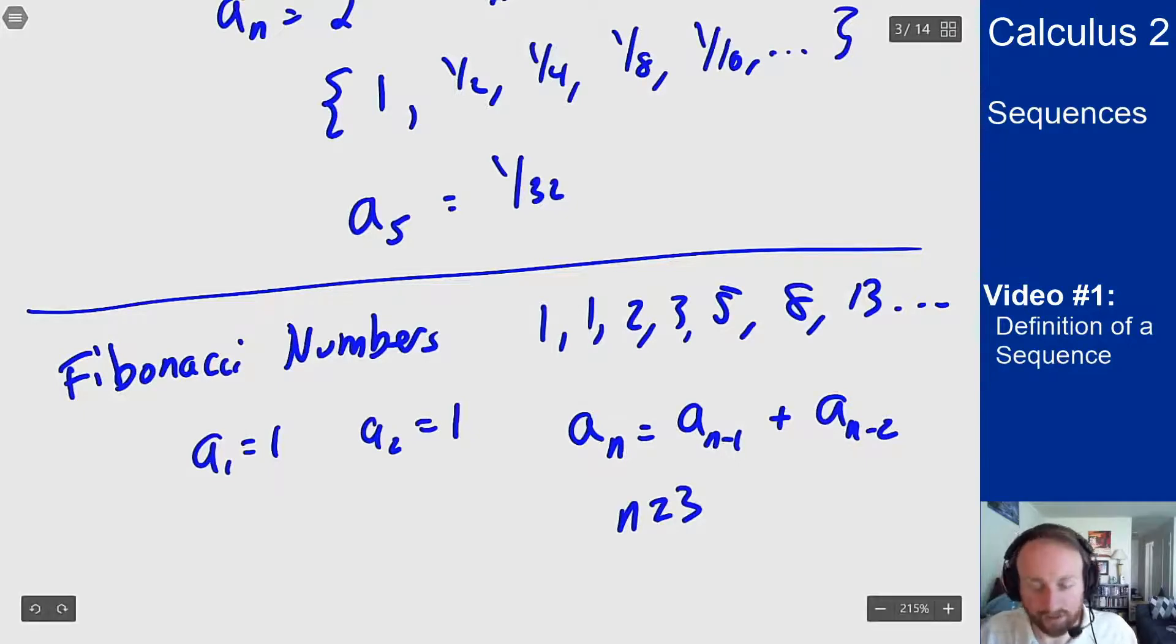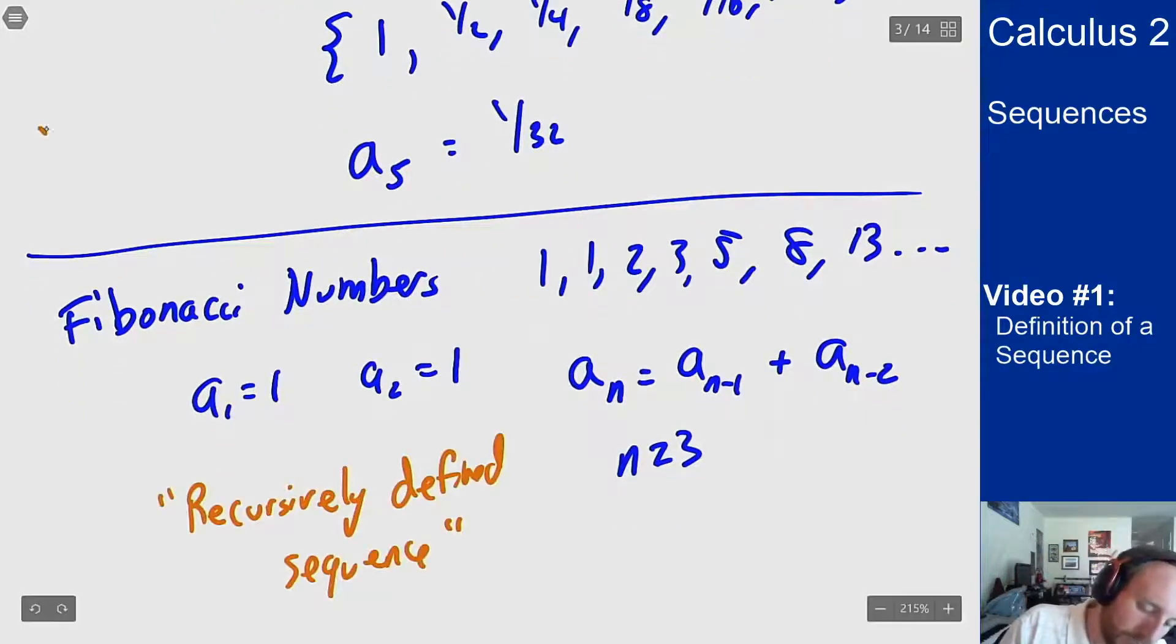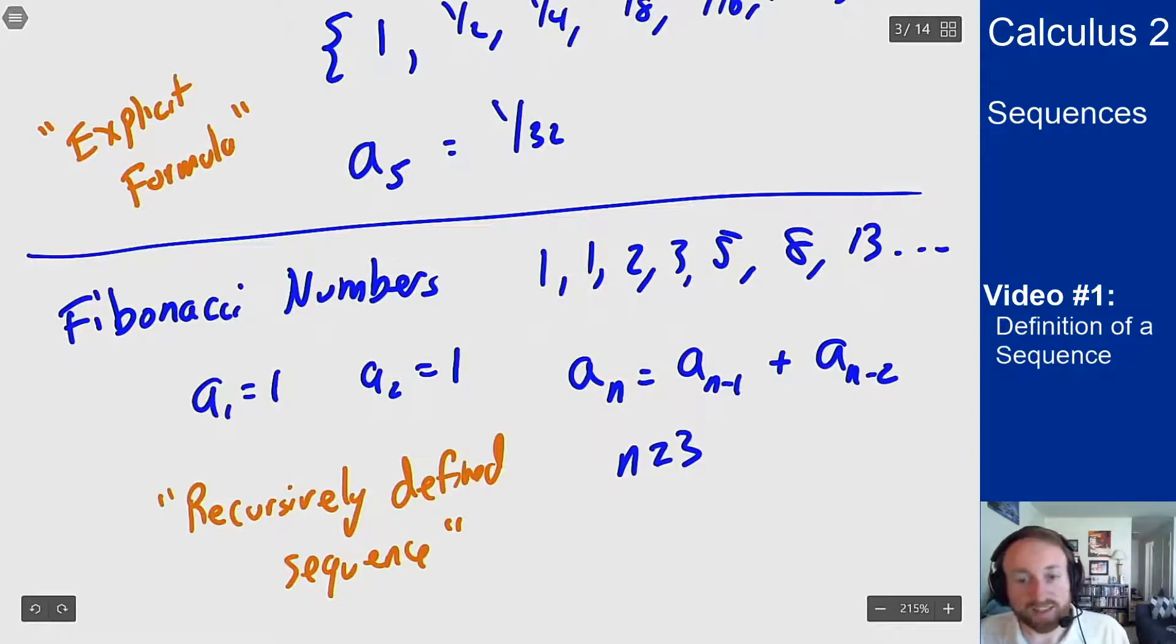This is called a recursively defined sequence, whereas the other appears more of an explicit form. There are ways to go back and forth between these a lot of the time. The Fibonacci numbers have a really interesting explicit formula. If you want to look it up, it involves a square root of 5, which is kind of crazy.